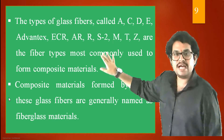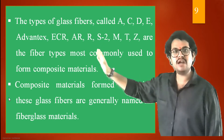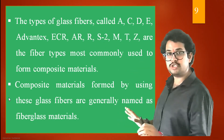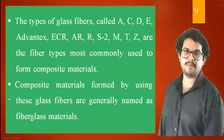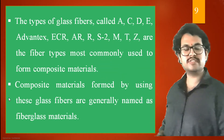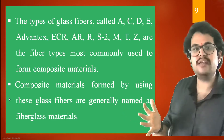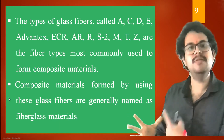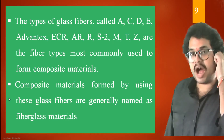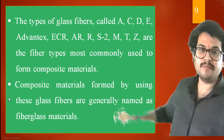The glass fiber types most commonly used to form a composite material are: A, C, D, E, Advantex, ECR, AR, R, S2, M, T, and Z. Whenever we want to prepare a composite material, we will be considering only these categories. The composite materials formed by using all these categories of glass fibers are generally named fiberglass materials.